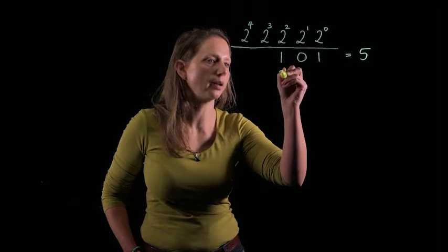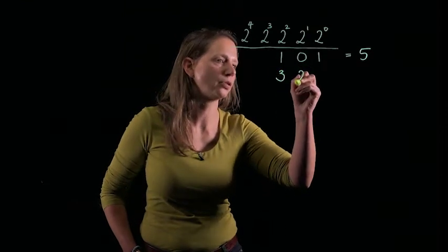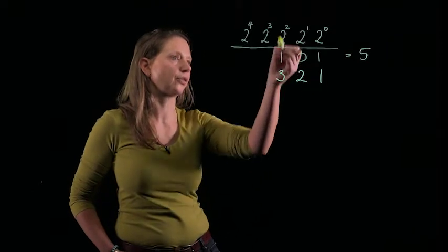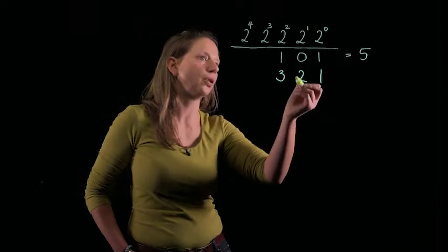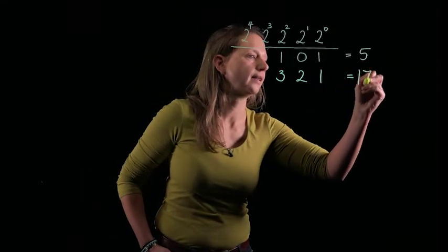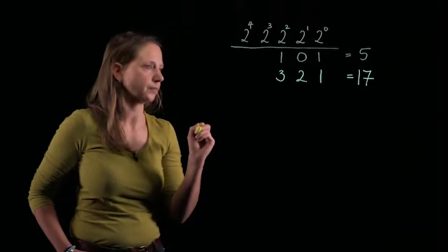So I could write the numbers 3, 2, 1, and this number here represents 3 lots of 4, 2 lots of 2, 1 lot of 1, and so that is 17.